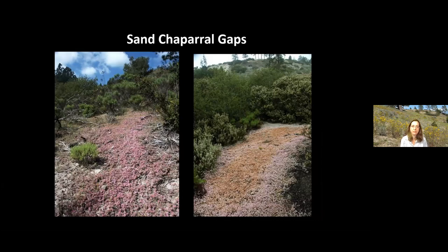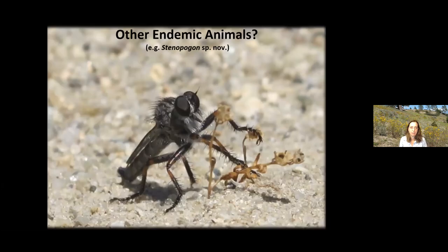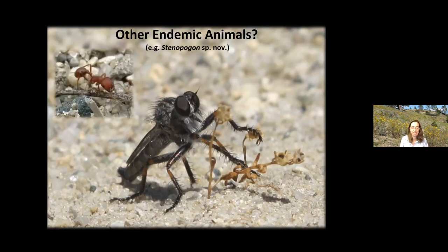Kangaroo rats really require those Sandhills chaparral gaps because they're herbivores — they feed on seeds, and those seeds are most abundant in the gaps in the earlier successional chaparral. Just like with the plants, there are other insects primarily that have not yet been described. Randy Morgan was a local naturalist who did extensive collecting and work describing Sandhills communities and species; his collections are at UC Santa Cruz. According to Randy, there are other endemic animals, including robber flies and many ants that have yet to be described.